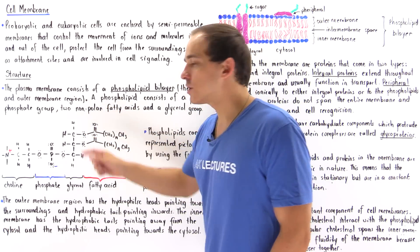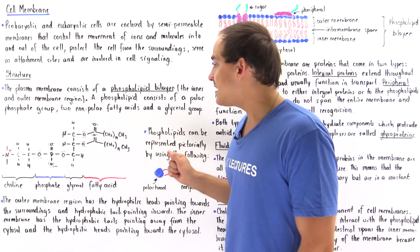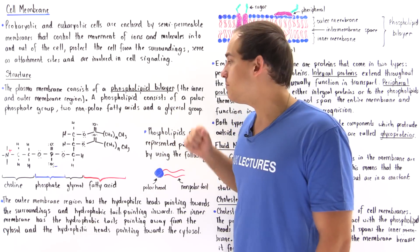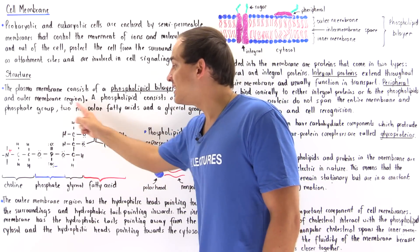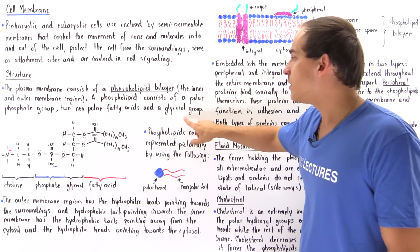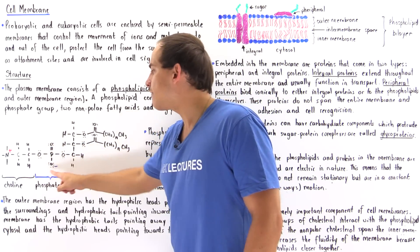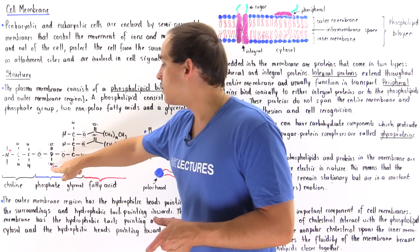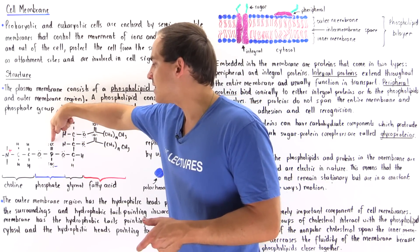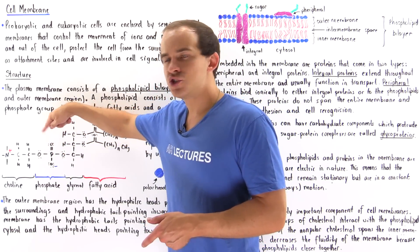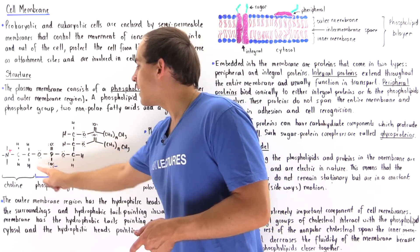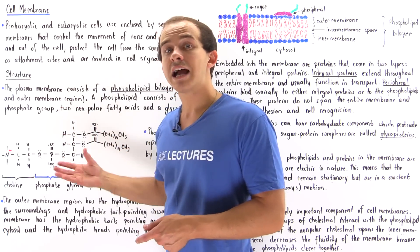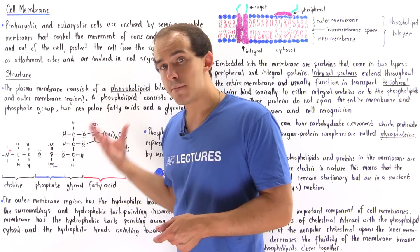We have the non-polar hydrophobic fatty acids — two of them, which can be the same or different. We have our connection, the backbone, the glycerol group, and we have the phosphate group that bears a negative charge on the oxygen, which is delocalized among two oxygens. There is an electric dipole moment in the phosphate group, and that's exactly why it's a polar molecule.